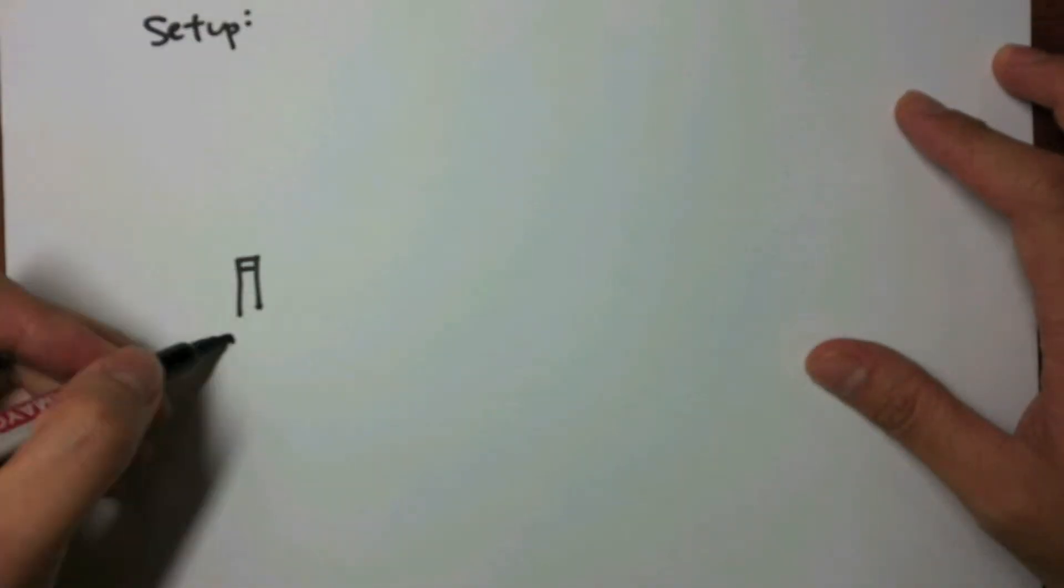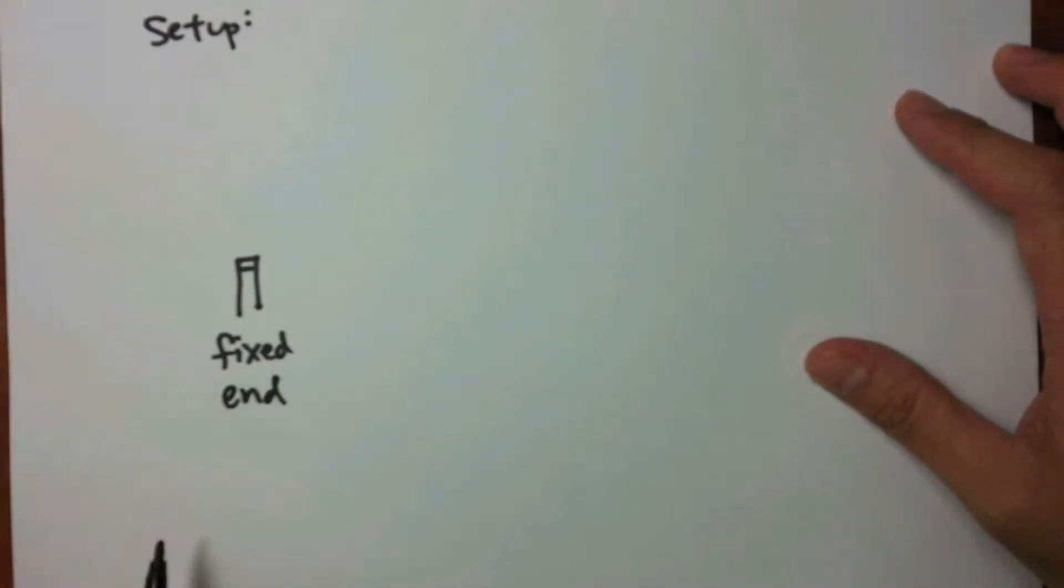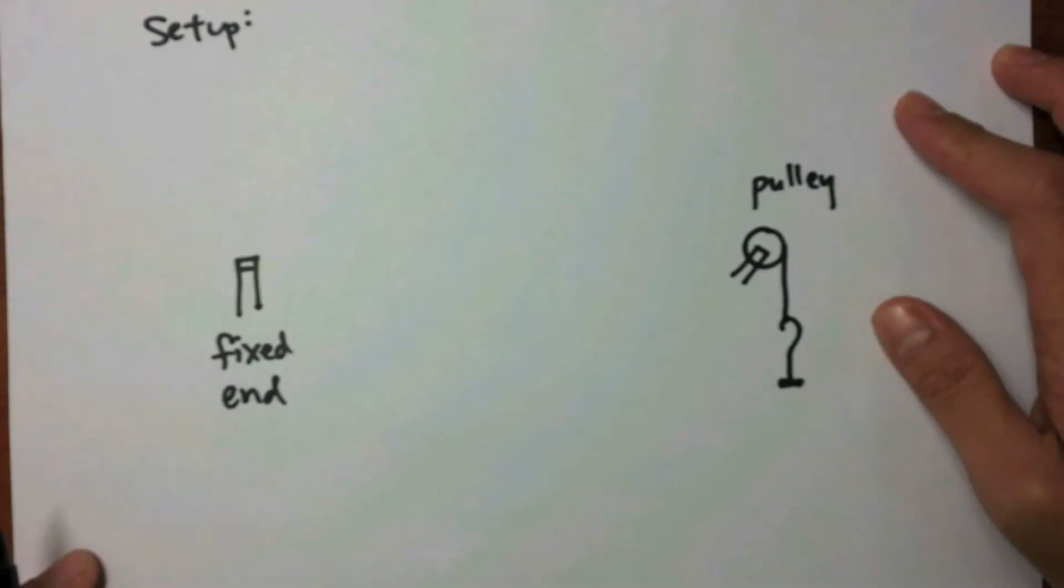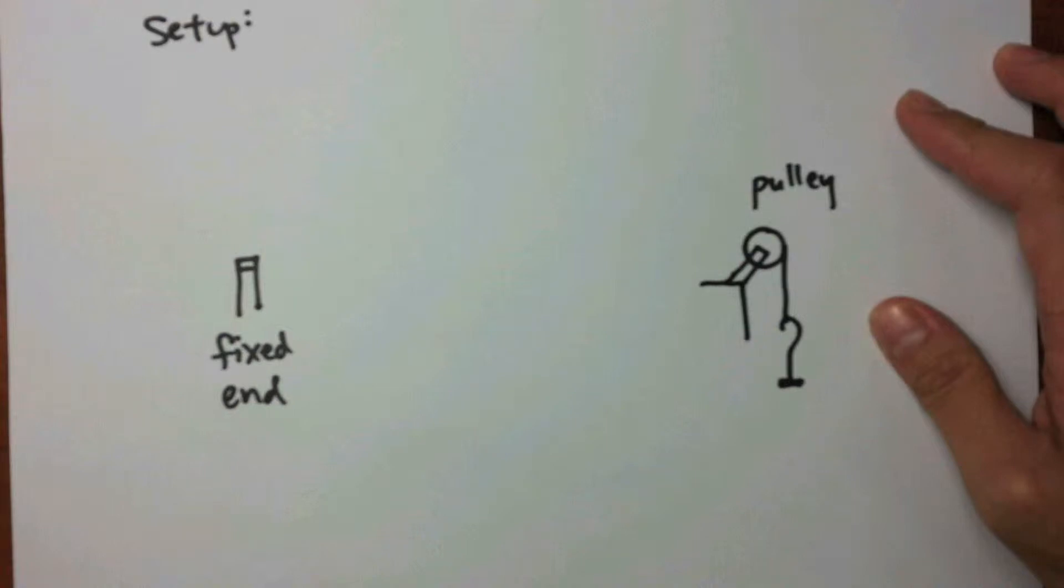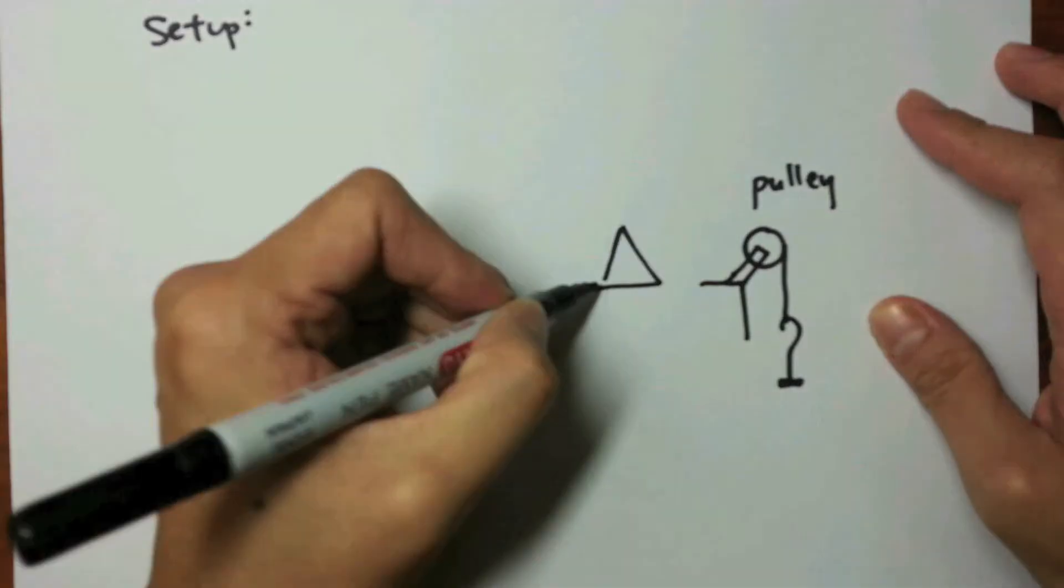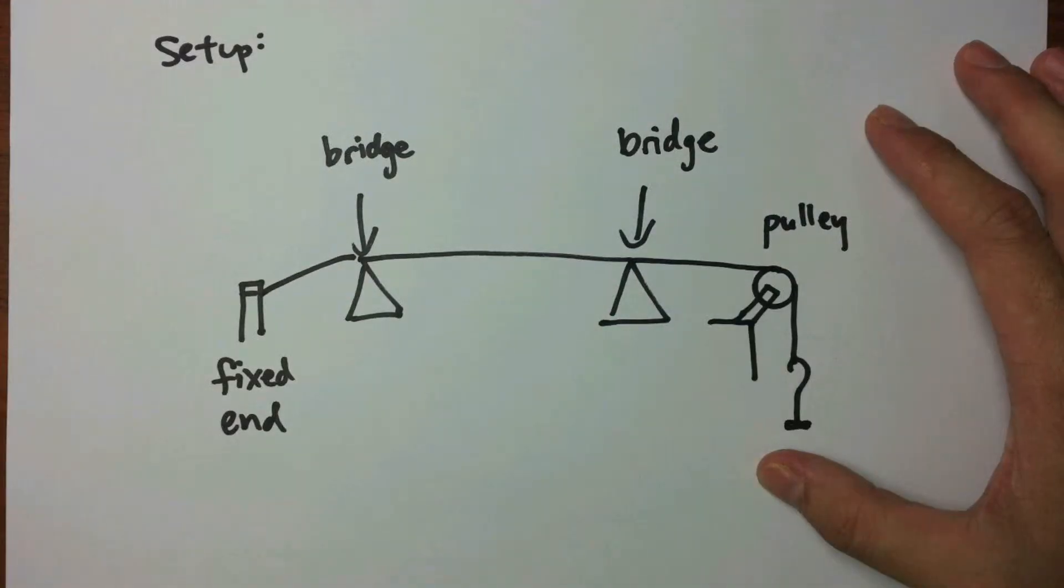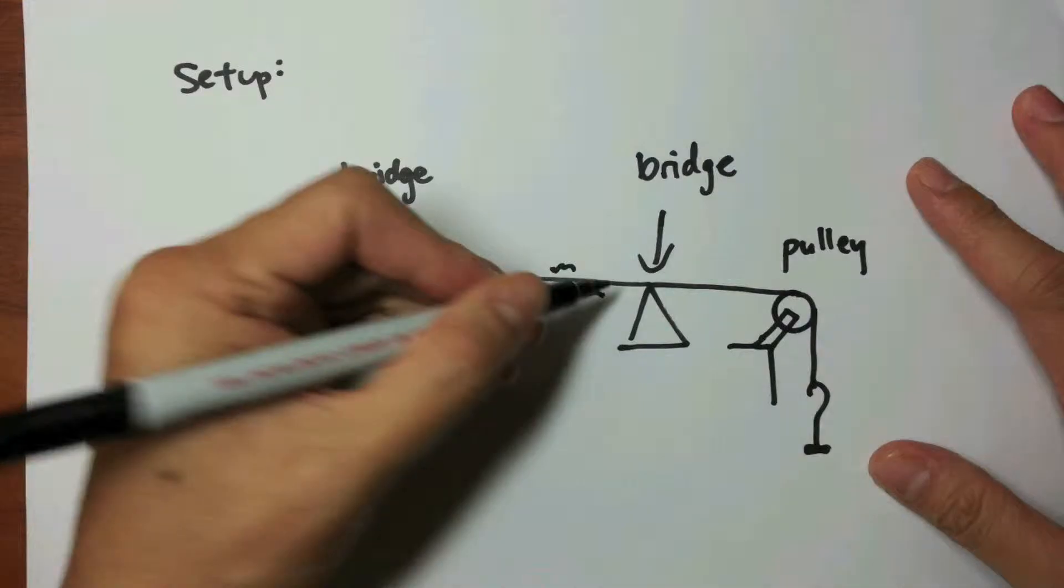Procedure: The experiment will be set up according to this diagram. One end of the wire is first tied to a fixed object. The other end is hanging over a pulley clamped on the edge of the laboratory table and tied to a mass hanger. To control the length of the wire, place a bridge at each end. Only the length of the wire between the two bridges will be vibrating. We shall keep this length constant for the whole experiment.